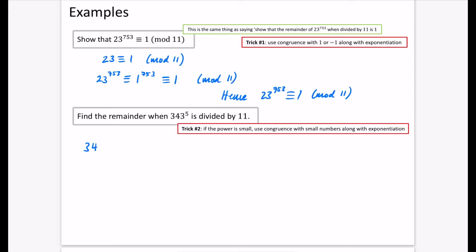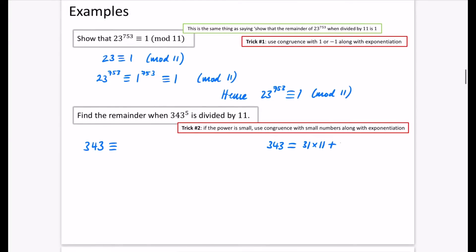Let's begin by thinking: what is 343 congruent to? You might do the division algorithm on your page. 343 equals 31 lots of 11, and 31 times 11 is 341, so there's a remainder of 2. That means 343 is congruent to 2 mod 11. And this is what I mean — the power is only 5, and 2 is a small number, so we can just use exponentiation.